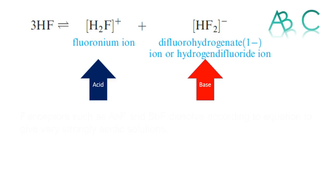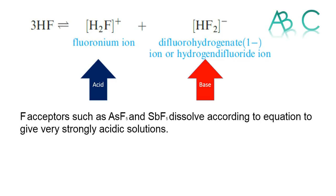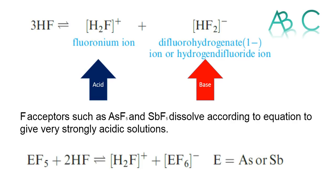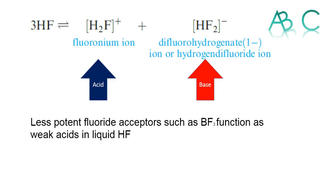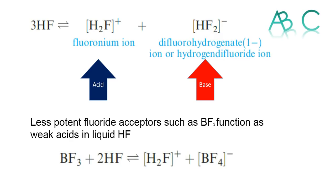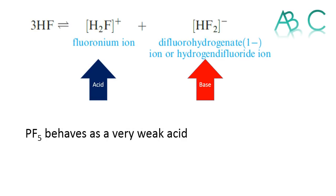Fluoride acceptors such as ASF5 and SBF5 dissolve according to the equation shown, giving very strongly acidic solutions — they form the fluoronium ion, so they act as acids. Similarly, less potent fluoride acceptors such as BF3 function as a weak acid in liquid HF, also forming the fluoronium ion as shown in the equation.